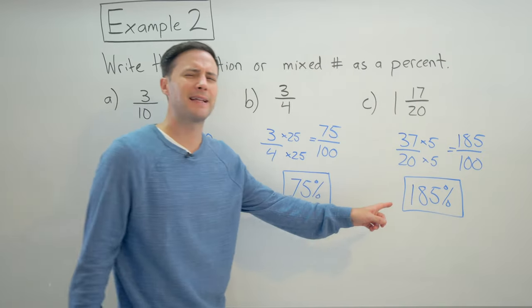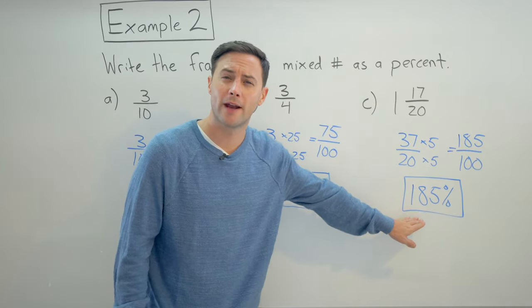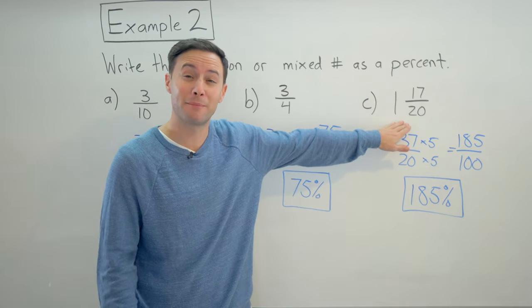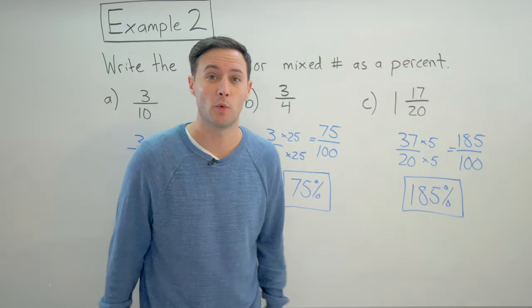Which means one in seventeen over twenty is equal to a hundred and eighty five percent. Now, does that make sense? It's greater than a hundred percent. And yes, it does. Because remember, we started with a mixed number, which is greater than one.